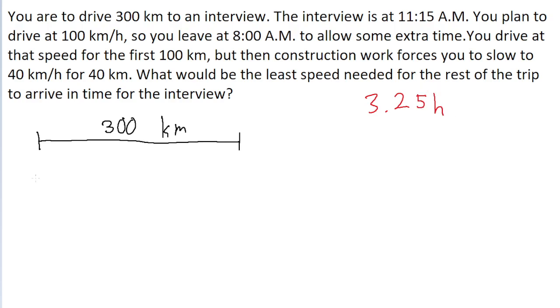The problem gives us some information about the first part of the trip. First, we travel 100 kilometers at a speed of 100 kilometers per hour. And then we travel 40 kilometers at 40 kilometers per hour.